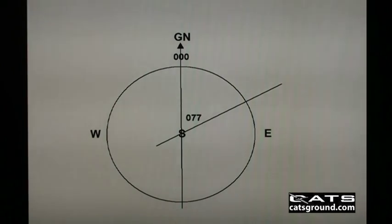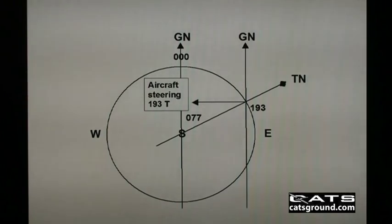Transfer the grid reference to the aircraft position. And add in true north, which is at the end of the line coming out from the S in the centre of the page. The aircraft is steering 193 degrees true, which is measured from the true north reference.